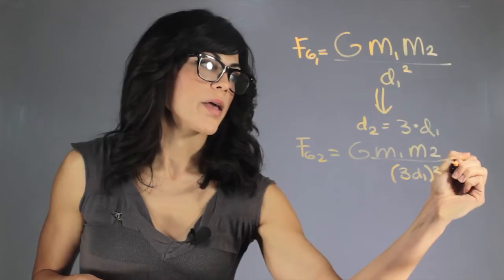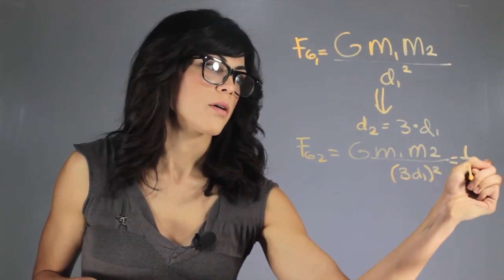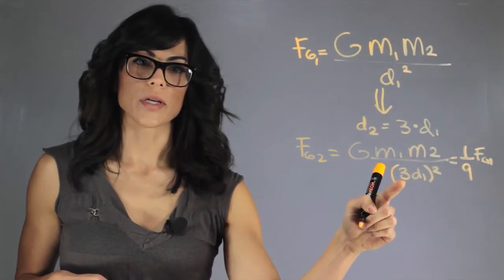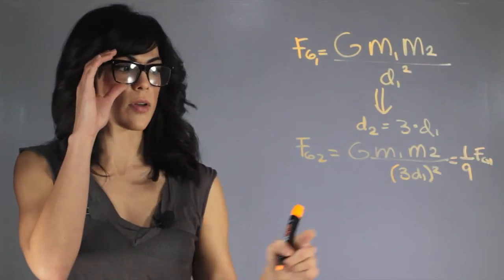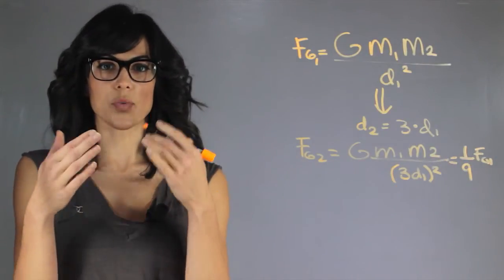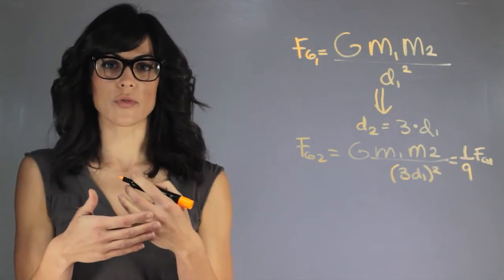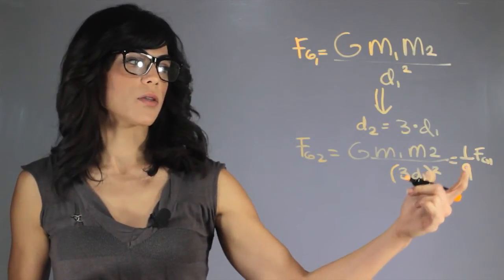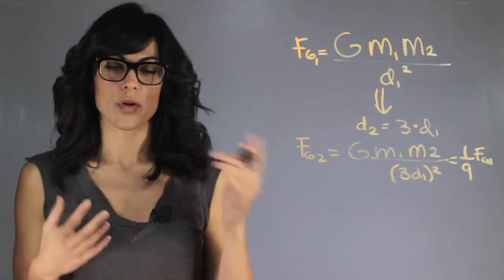So now we have one ninth of the original force because we had to square the 3 of the distance. So even when we just change the distance size, what it does is it drops the gravitational force by the square of it. So we have one ninth of the force of the previous force.